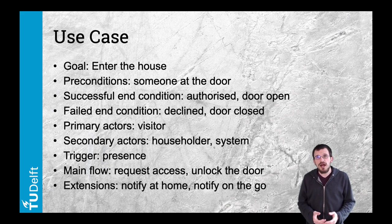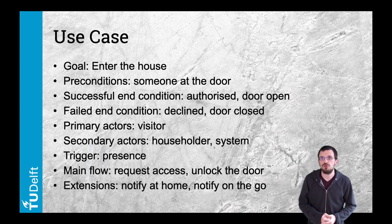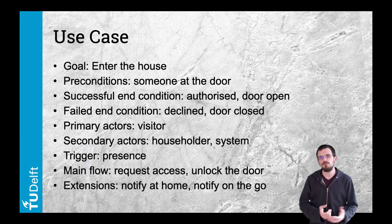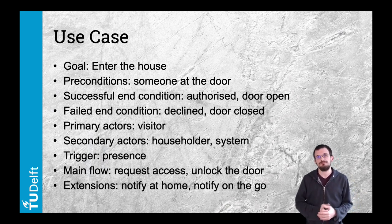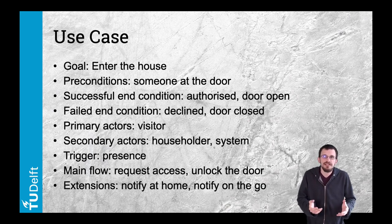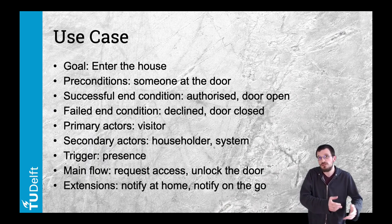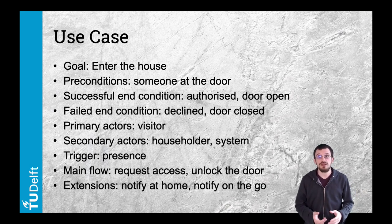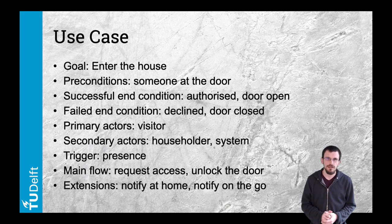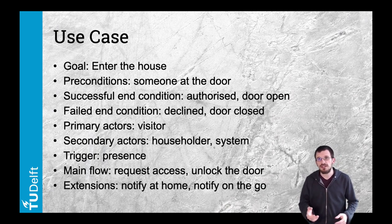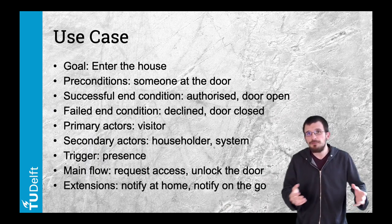Here we have the notion of actors. The primary actors are the ones triggering the use case — the visitor, for instance. The secondary actors are the ones playing other roles in the use case. For the doorbell, we have the system itself, which tries to identify the visitor to take autonomous action — in the demo, identifying meant that the person should look surprised. We also have the householder, who can decide to interact with the visitor and open the door. Note that the householder can also be in the role of visitor when coming back home. Triggers start the use case — for the doorbell it could be a presence event in the street, giving us two main use cases: request access and unlock the door.